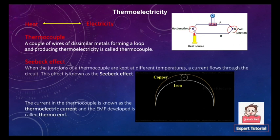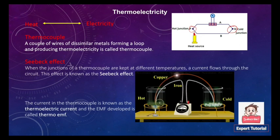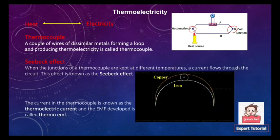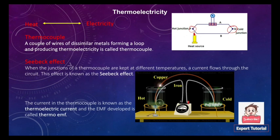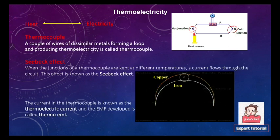The current in the thermocouple is known as the thermoelectric current, and the EMF that develops is known as the thermo EMF — these definitions are very important for your upcoming semester examination. The Seebeck effect depends on the temperature difference between the two junctions and on the nature of the metals; choosing different metals will produce a different current.